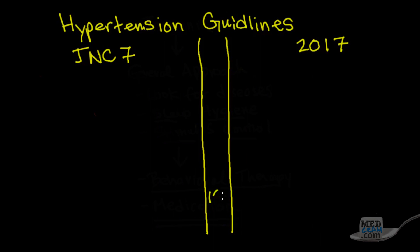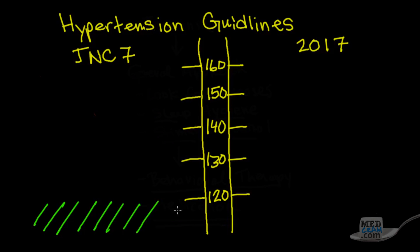I want to break this up into the systolic blood pressure just for clarity. So here at the bottom, we're going to have 120, and then as we move up, we'll have 130, and then even as high as 160. Now I'll add the diastolic numbers in a moment, but I think the guidelines are easier to remember initially with just the systolic numbers. In JNC7, they said that anybody less than 120 was going to be okay in terms of systolic blood pressure, and that was considered to be normal.